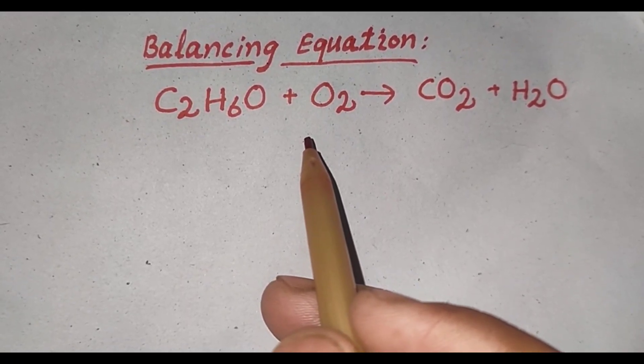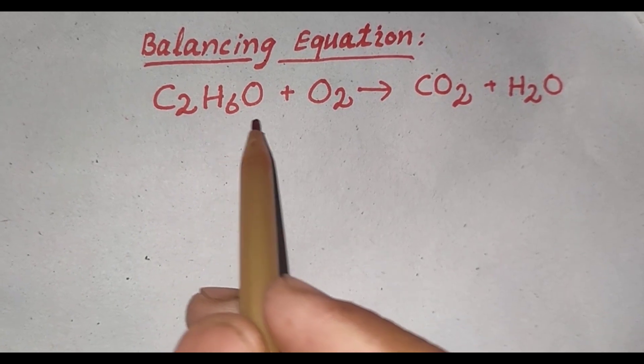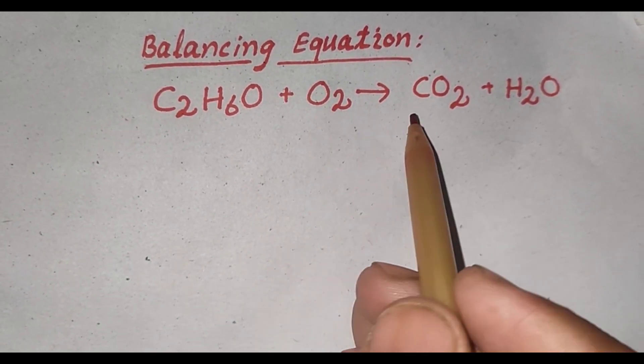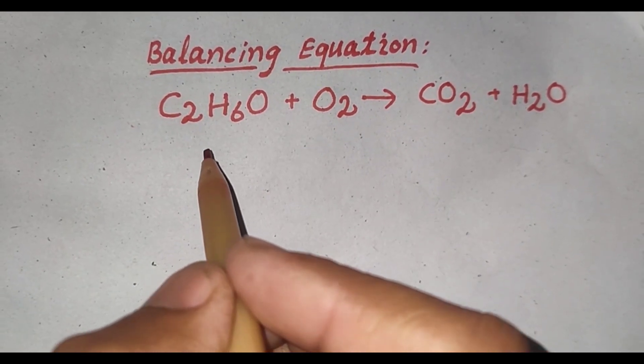Balancing Chemical Equation. Today we will balance the chemical reaction of C2H6O with oxygen to form carbon dioxide and water. Let's look at the left hand side of the atom.